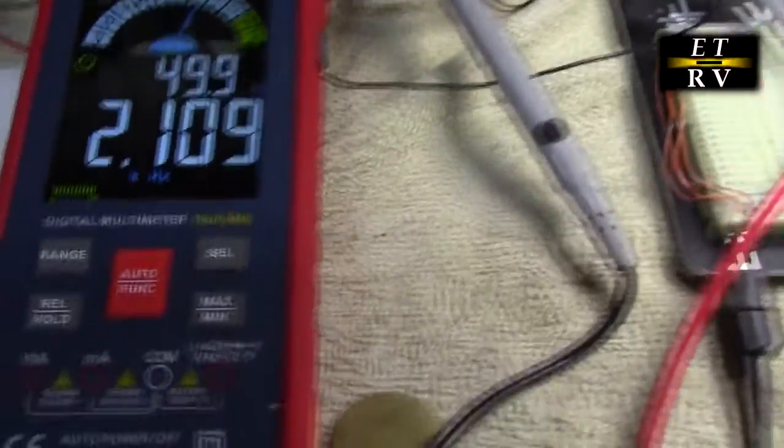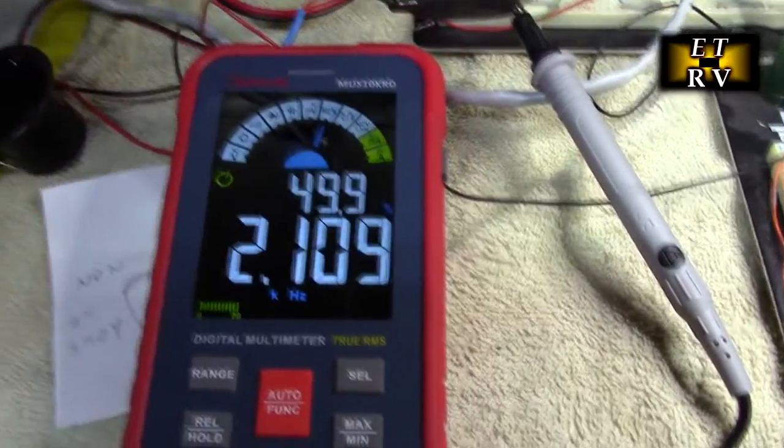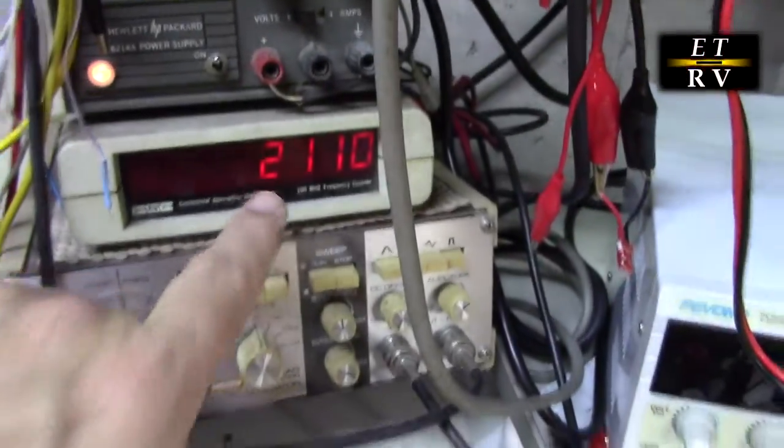And I want to measure the output of this. So I have it across the meter, and I have it on hertz and percentage. And look what it's showing: 2.1 kilohertz, which is matching what I'm reading right there.